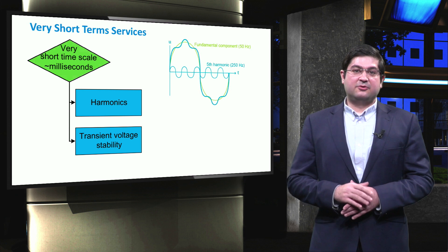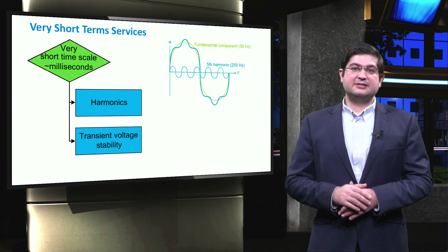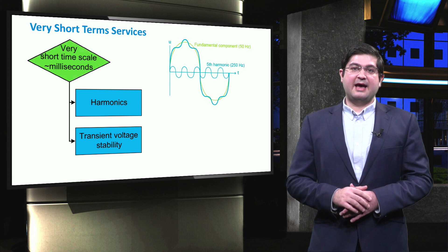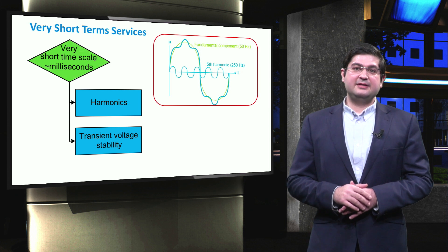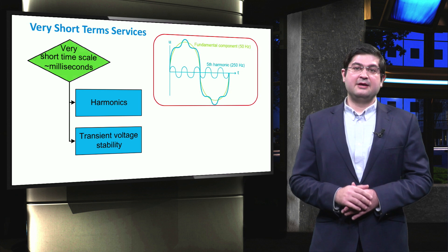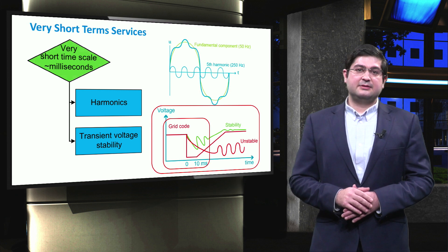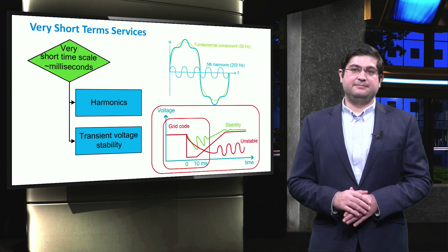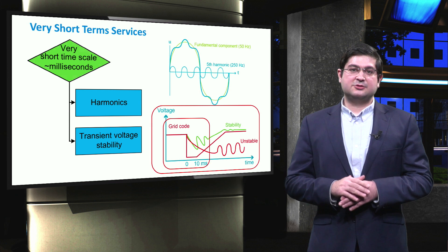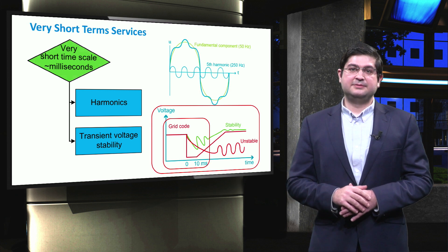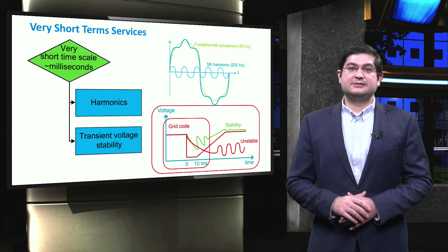One example of services for very short term is the harmonics of voltage and current that are injected by CPV loads and electronically interfaced units. These harmonics are relative to the fundamental component, which is typically 50 Hz. Another typical example is transient stability, which refers to the capability of a system to maintain synchronous operation following a fault, which can be, for instance, the connection of one phase or three phases to the ground.